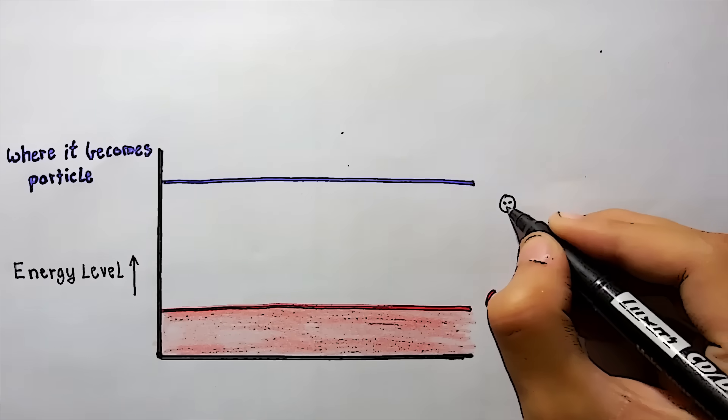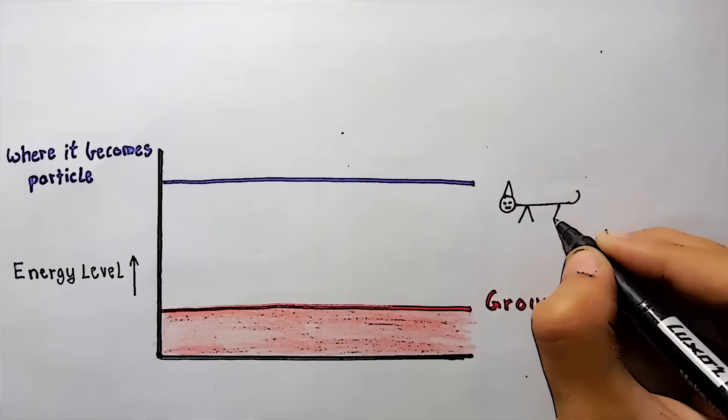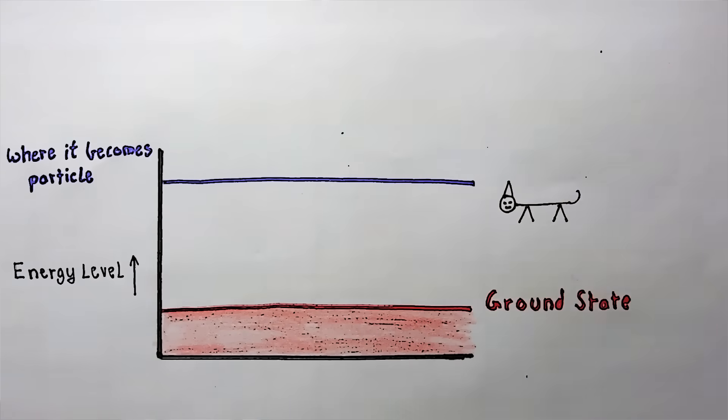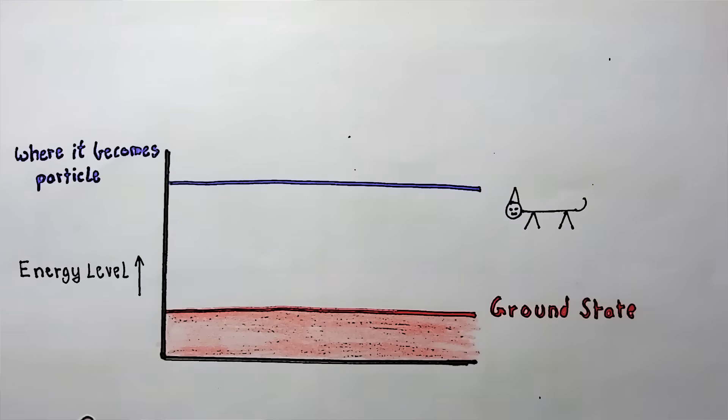And as the energy propagates through the field, it will look like the particle is moving. Some fields require more energy than others in order to create a particle. The amount of energy is proportional to the mass of the associated particles.